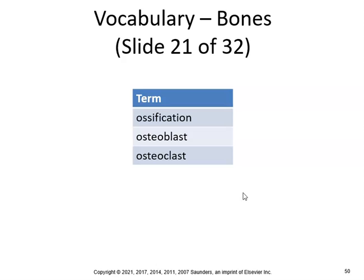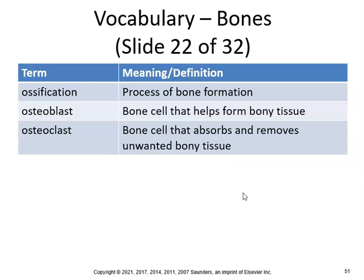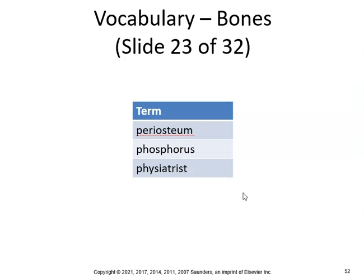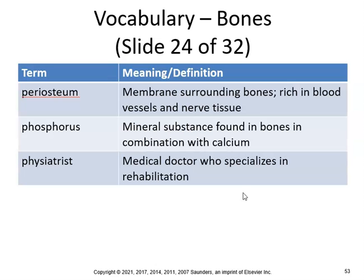Make sure you know the difference: an osteoblast is a bone cell that helps form bony tissue — 'blast' means forming. An osteoclast is a bone cell that absorbs and removes unwanted bone — 'clast' relates to clashing or breaking down. Think of it as: blasting forms something, clashing removes it.